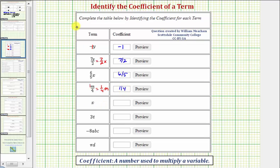The next term is x, which we can think of as one x, which means one times x, and therefore the coefficient is one.